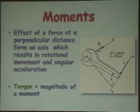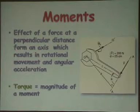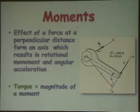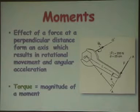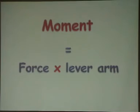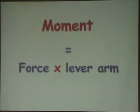The next term is moment. A moment is the effect of a force at a particular distance from an axis, which produces rotational movement and angular acceleration. Torque is the magnitude of the moment. When we have a longer lever arm, we need less force to produce the same action. The moment equals the force multiplied by the lever arm.